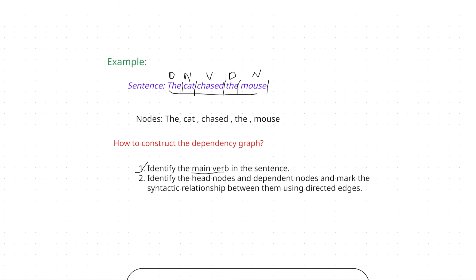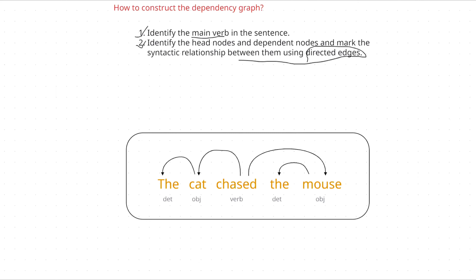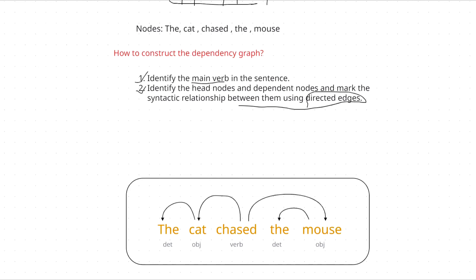So 'chased' is the root node here. The second step is to identify the head nodes and the dependent nodes and mark the syntactic relationship between these nodes using directed edges. Write the sentence first, then start with the root node 'chased' only.